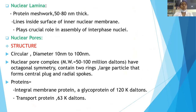Nuclear lamina is a protein mesh 50 to 80 nanometers thick that lines the inside surface of the inner nuclear membrane. It plays a crucial role in the assembly of interphase nuclei. The nuclear pore structure has a circular diameter of 10 to 100 nm. The nuclear pore complex has a molecular weight corresponding to 50 to 100 nm, has octagonal symmetry, and contains two rings with large particles forming a central plug and radial spokes. It also contains integral membrane proteins and a glycoprotein of 120 kDa, and transport proteins of 63 kDa.